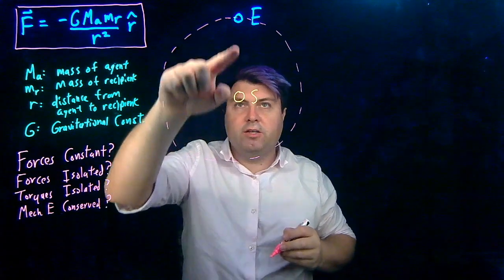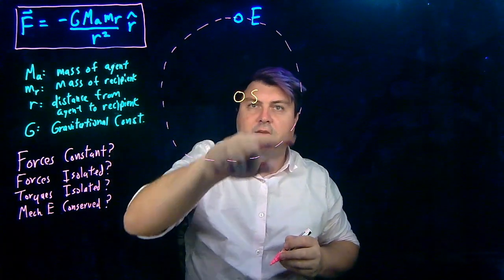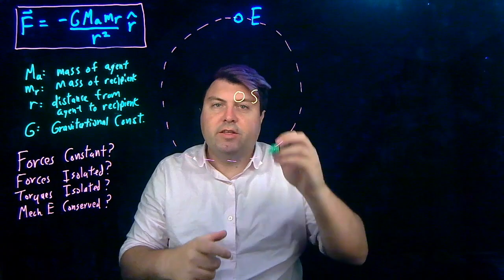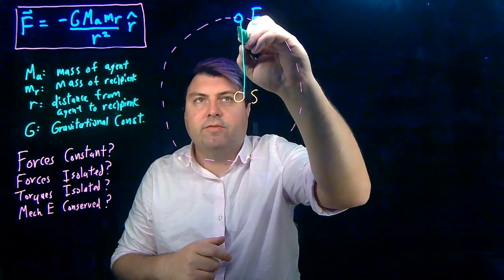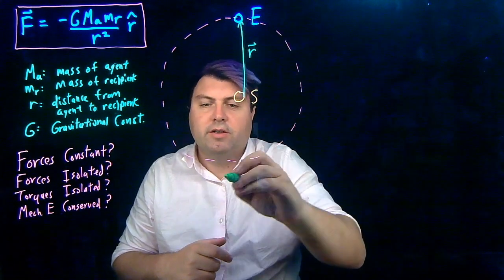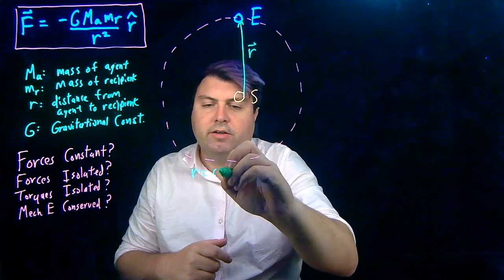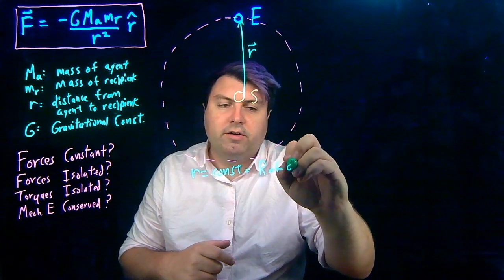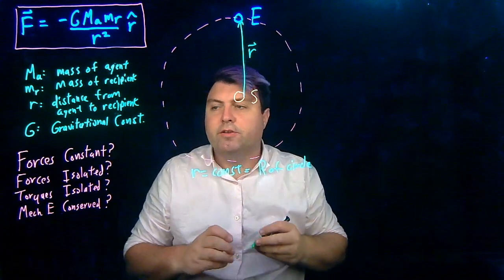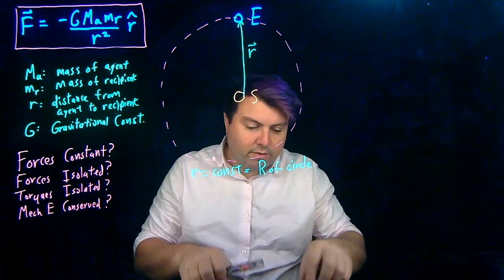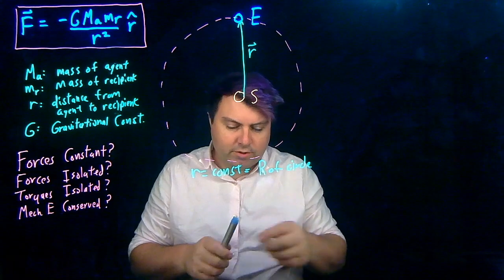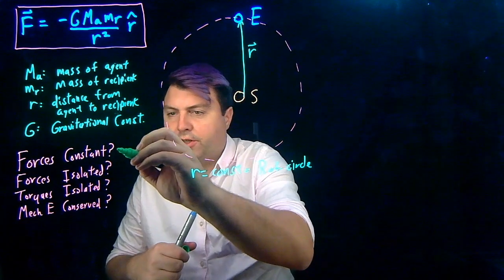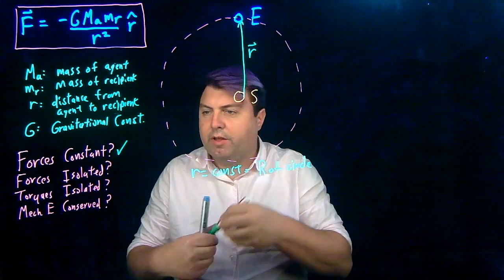Then the radius, the distance from the agent to the recipient, will stay the same as it orbits around here. So in this case, we have this radius r, and this radius r is a constant and it's equal to the r of the circle. So what we can do is, if our forces are constant, we can check this box and then we can start with...